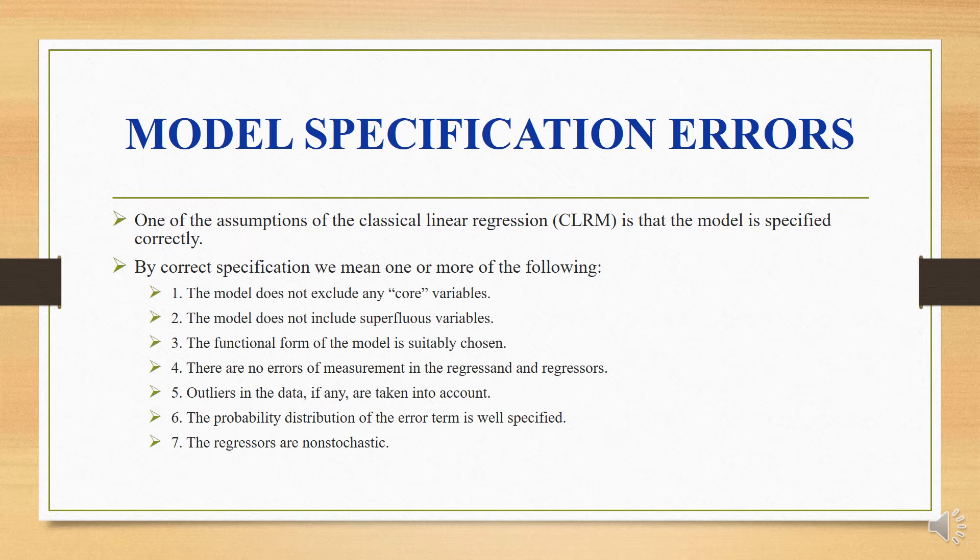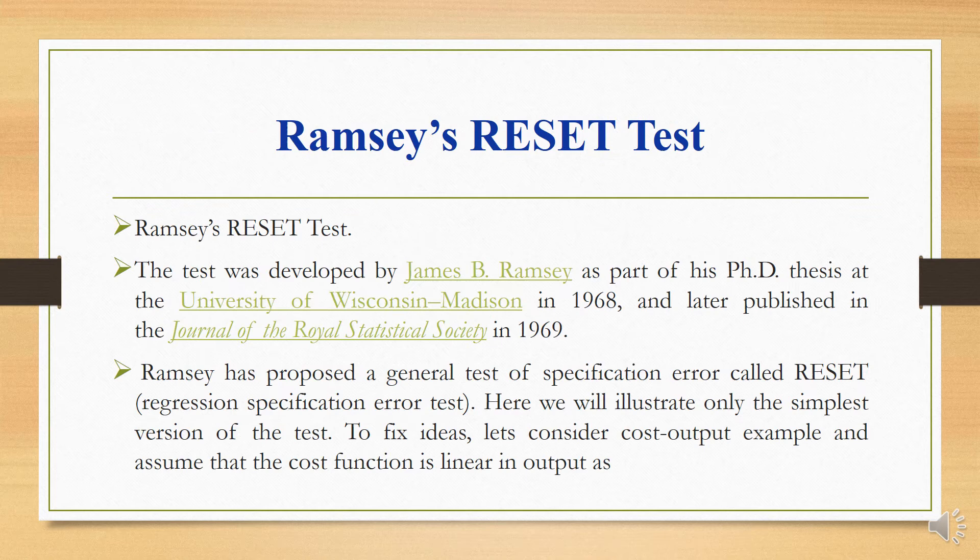Number five, outliers in the data, if any, are taken into account. What is an outlier? The large extreme values and the small extreme values in the given data set or series. Number six, the probability distribution of the error term is well specified. And number seven, the regressors are non-stochastic.